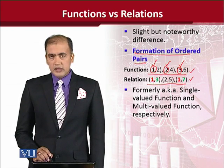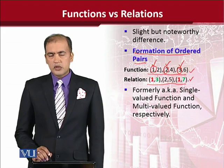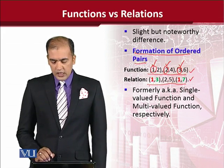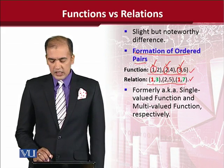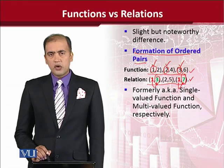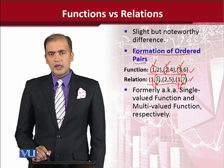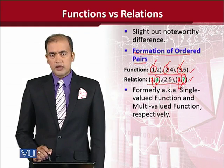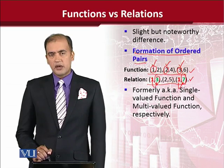So it is not suitable to call it a function; we should call it a relation. Another way of looking at it is that 1 can create 3, and 1 can also create 7 as the value of the dependent variable. So this is another distinction that we must remember when it comes to the differentiation between a function and a relation.